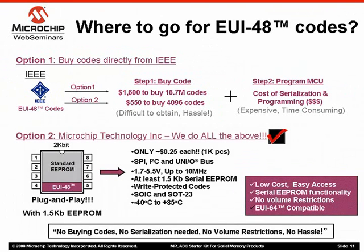The other option to obtain MAC addresses is to buy Microchip's MAC address chips — we do all of the above for you and more. Our pre-programmed EUI-48-enabled MAC address chips come with up to 1.5 KB of serial EEPROM that can be used to store configuration settings, routing tables, or even buffer small amounts of data. These plug-and-play devices come in three standard buses: the I2C, SPI, and UNIO bus. These codes are write-protected to ensure tamper-proof codes. And finally, they are low cost, easy to access, and come with no volume restrictions. They are priced at approximately $0.25 for 1,000 pieces on the web. We will see how to order them online and where to go on our website to get more information later in this demo.